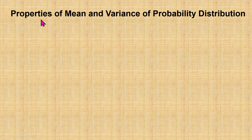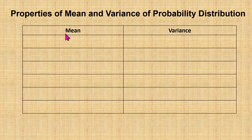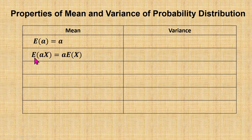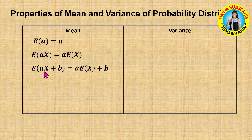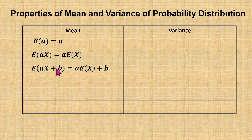Now we proceed to the properties of mean and variance of probability distribution. Starting from the expectation mean: the expectation of a constant a is equal to a. The expectation of a constant a times X is equal to a times E(X). For E(aX + b), we can separate it into E(aX) plus E(b), where E(aX) equals a times E(X) and E(b) equals b.